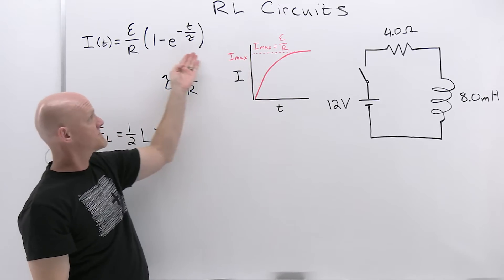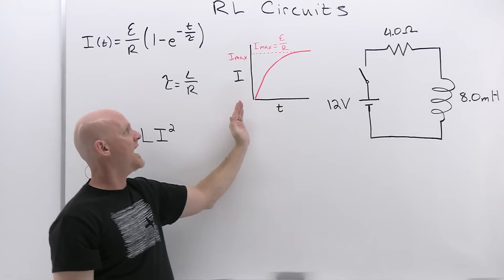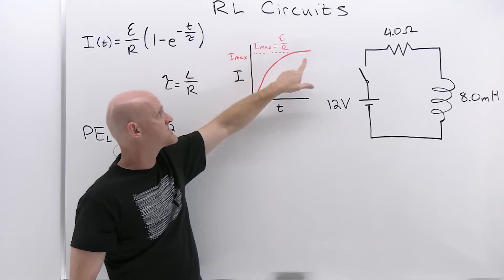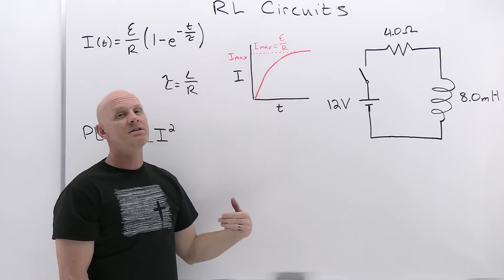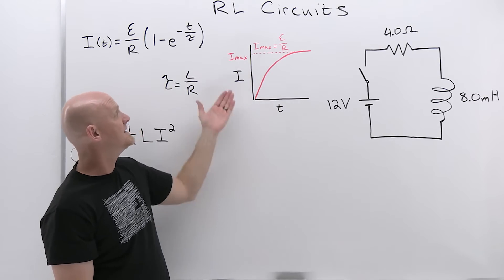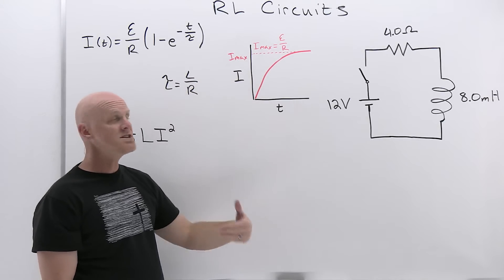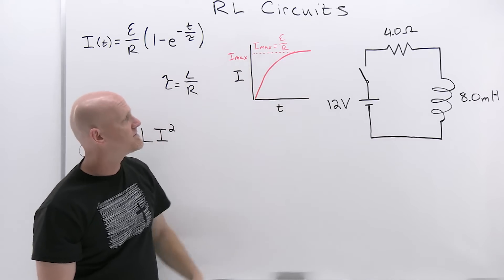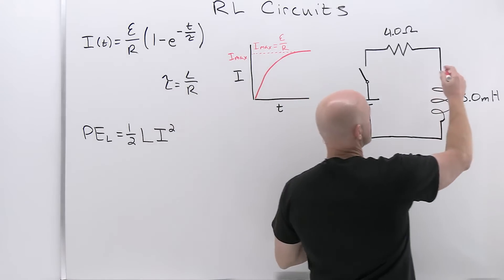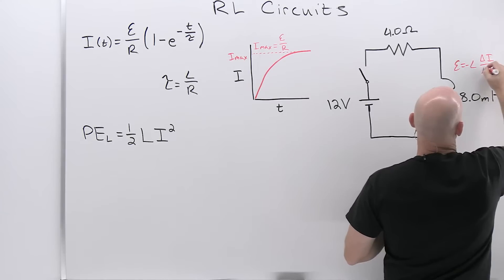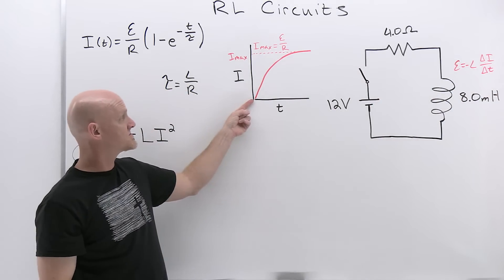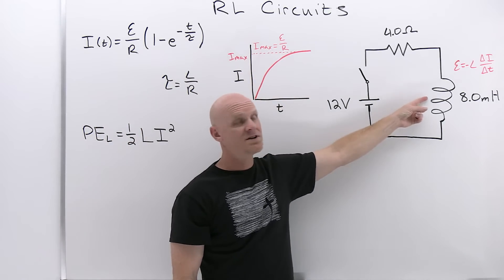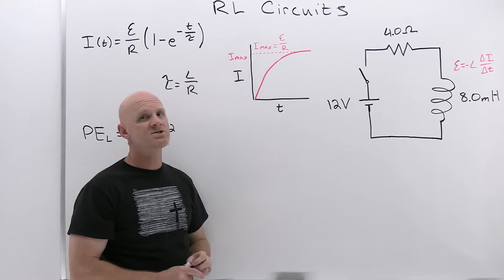Looking at the graphical representation, the current starts at zero and asymptotically approaches the maximum value EMF/R. As the current approaches maximum, the slope — which is the rate of change of current over time — approaches zero. The slope is greatest right at the beginning, meaning the inductor provides its greatest resistance to the change in current initially and effectively zero resistance at the end. The potential drop across the inductor is −L·(ΔI/Δt): largest initially and approaching zero once maximum current is reached. This will be important for upcoming questions.